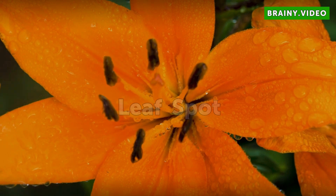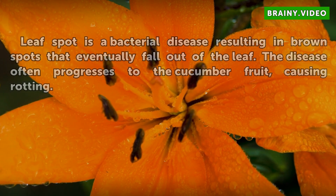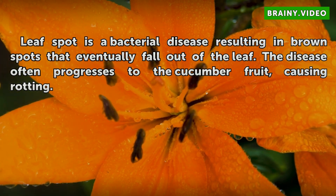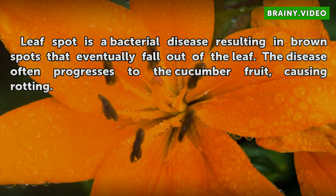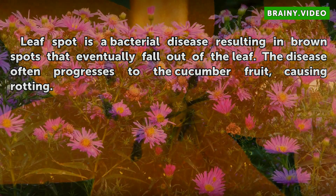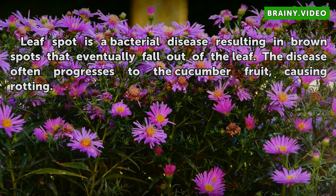Leaf spot. Leaf spot is a bacterial disease resulting in brown spots that eventually fall out of the leaf. The disease often progresses to the cucumber fruit, causing rotting.